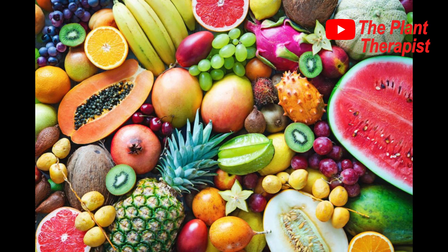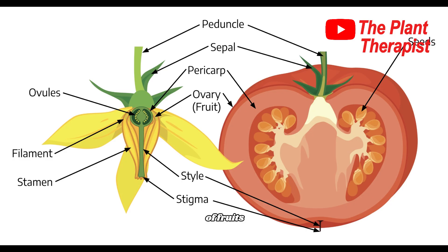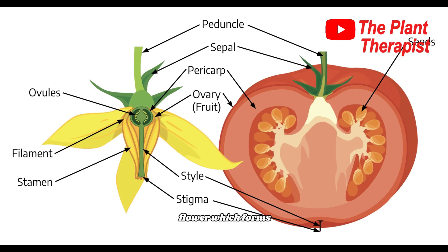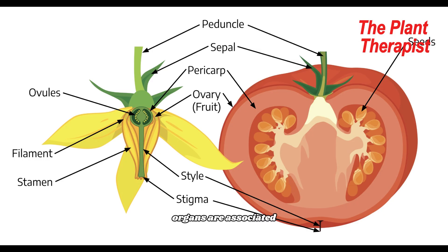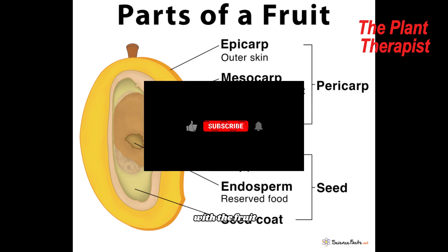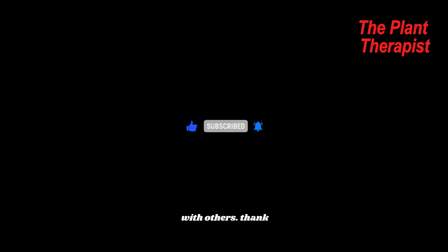Now that you know the types of fruit, you will realize that fruits are named based on the part of the flower which forms the mesocarp, the endocarp, and whether the accessory organs are associated with the fruit. Make sure you like this video, comment, and share with others. Thank you.